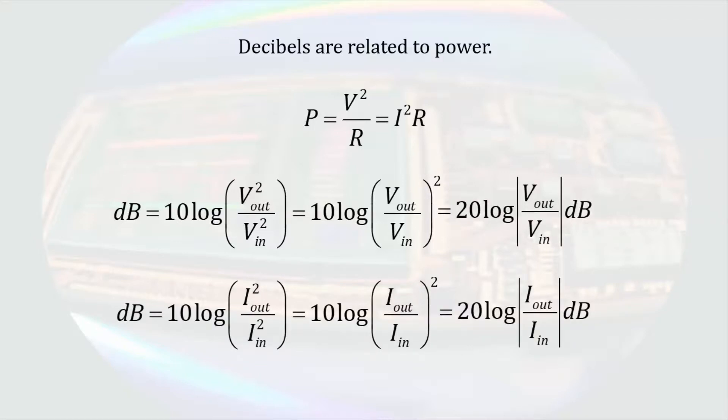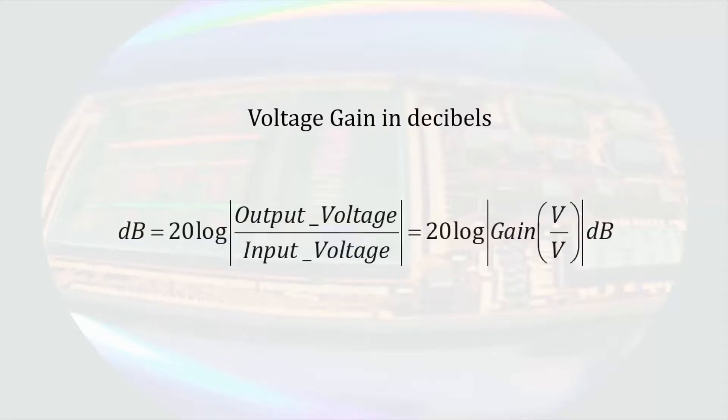As we might remember, raising the argument of the log function to a power is the same as multiplying the log function by the same power. So the factor of 10 is multiplied by 2. For that reason, when we talk about voltage gain in terms of decibels, we use 20 times the log of the absolute value of the output voltage over the input voltage.